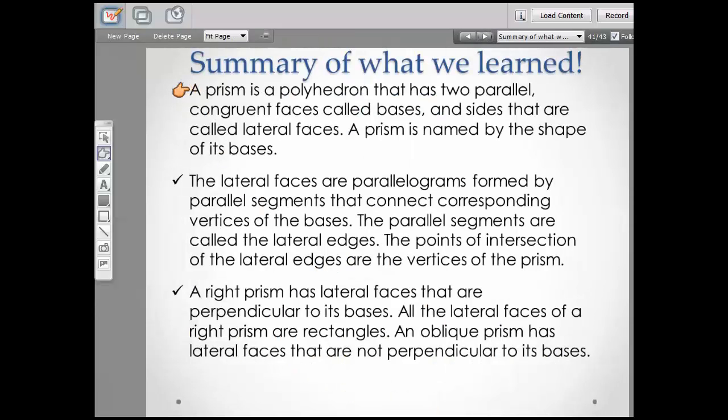Here's a summary of what we've learned today. A prism is a polyhedron that has two parallel congruent faces called bases and sides that are called lateral faces. A prism is named by the shape of its bases. The lateral faces are parallelograms formed by parallel segments that connect corresponding vertices of the bases. The parallel segments are called the lateral edges. The points of intersection of the lateral edges are vertices of the prism. A right prism has lateral faces that are perpendicular to its bases. All the lateral faces of a right prism are rectangles. An oblique prism has lateral faces that are not perpendicular to its bases.